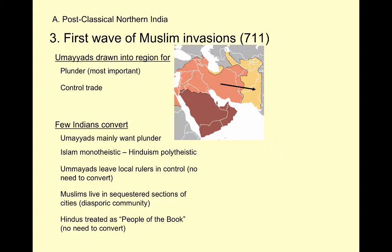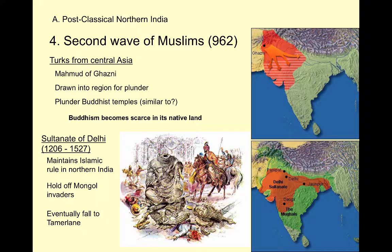Another reason we don't see mass conversion is that Muslims realize they must get along with the Hindu majority population. With millions of Hindus, a 'convert or die' approach would cause full-scale rebellion. So they protect Hindus and declare them 'people of the book' — Hindus have the Rig Veda, the Upanishads, and other religious texts; they pray to a god. Just like Jews and Christians, Hindus pay a jizya — the religious tax we discussed in our last set of notes — allowing them to keep their faith under government supervision.